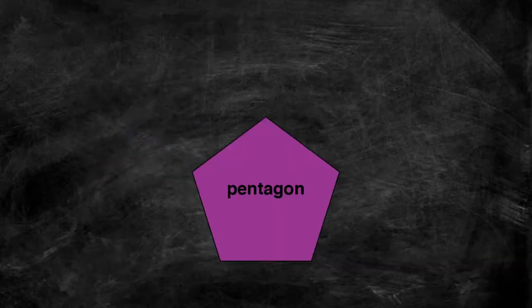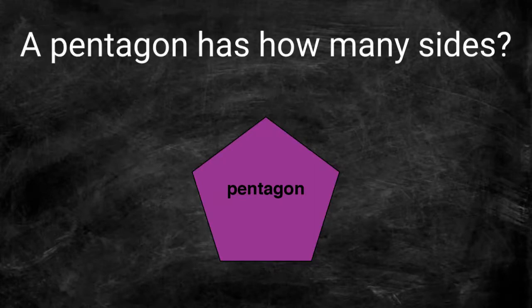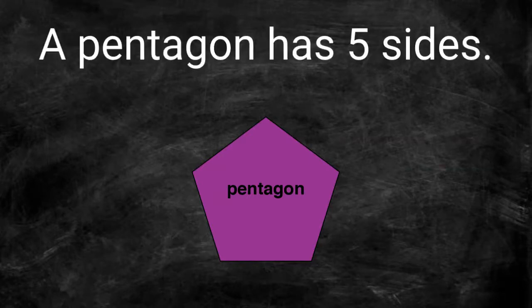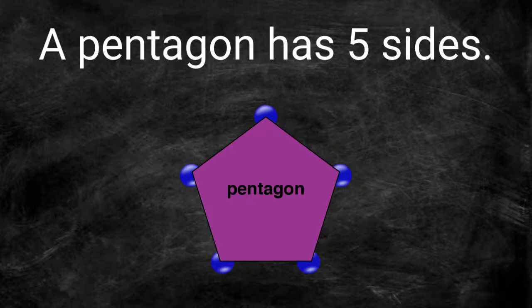A pentagon is another type of polygon. How many sides does this pentagon contain? Every pentagon has five sides. Pentagons also have five vertices.